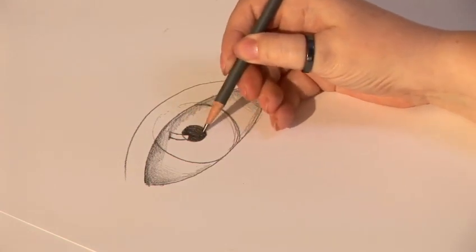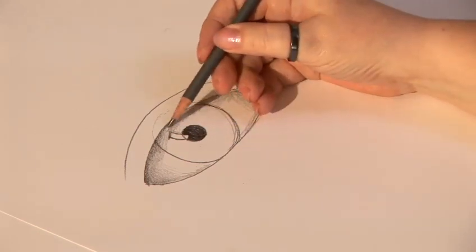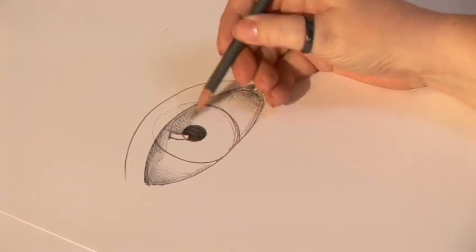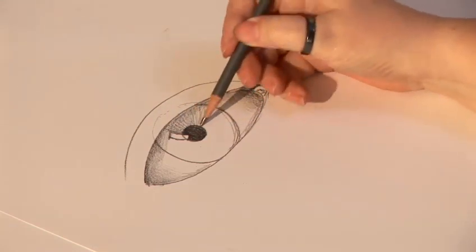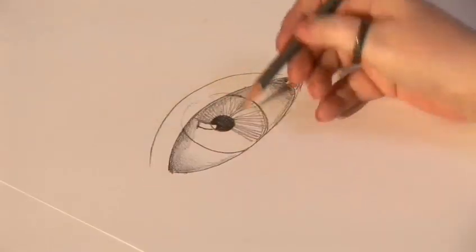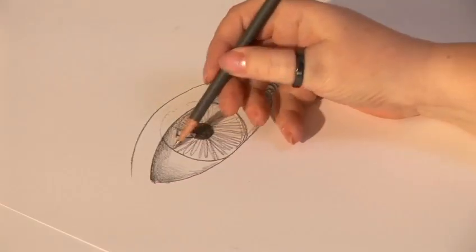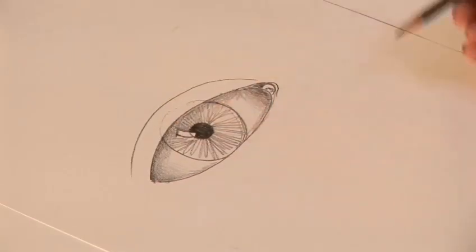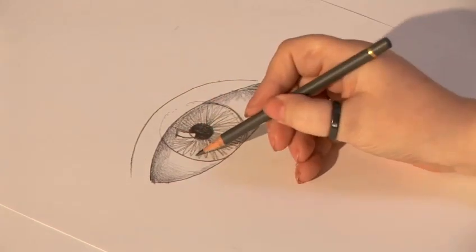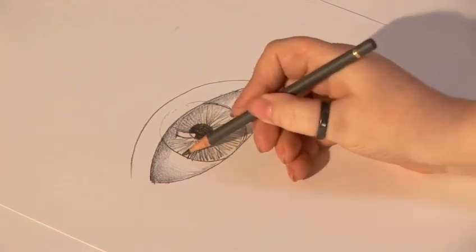You could use a softer pencil—I'm using the 2B but you could go into a 6B, really power it in. And now this is the trick: bicycle spokes come out from the pupil towards the edge of the iris. Don't spend too long on this because you're going to shade over it, but just to give you an idea of lines radiating out from the pupil. And you can also do the same radiating in from the edge of the iris.